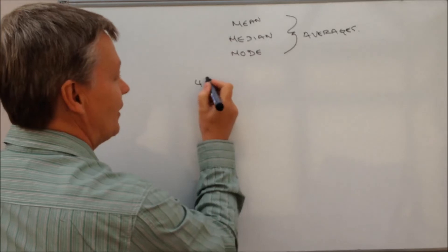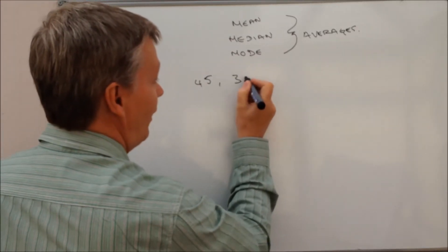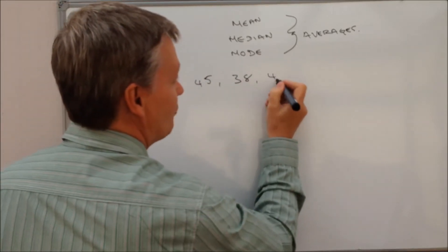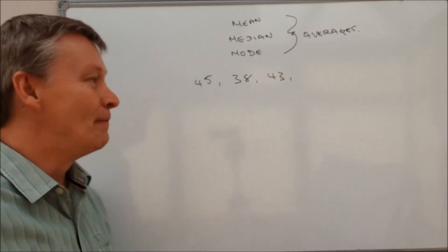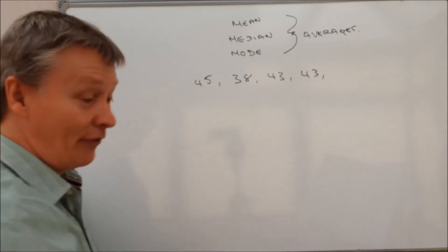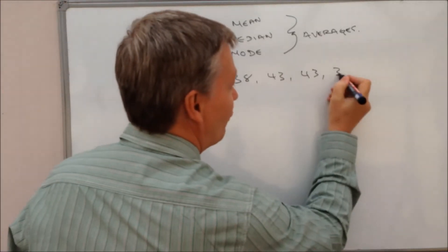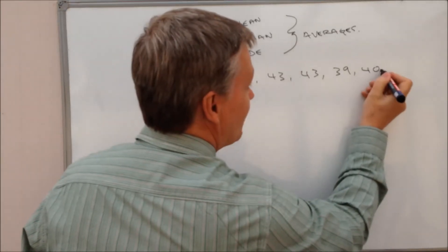So this particular question involves somebody who I've no idea why they would do this, but they decide to write down, write down the ages of seven of their relatives. So for some reason they pick up a pencil and paper and they write down these ages, and this is seven of their relatives.